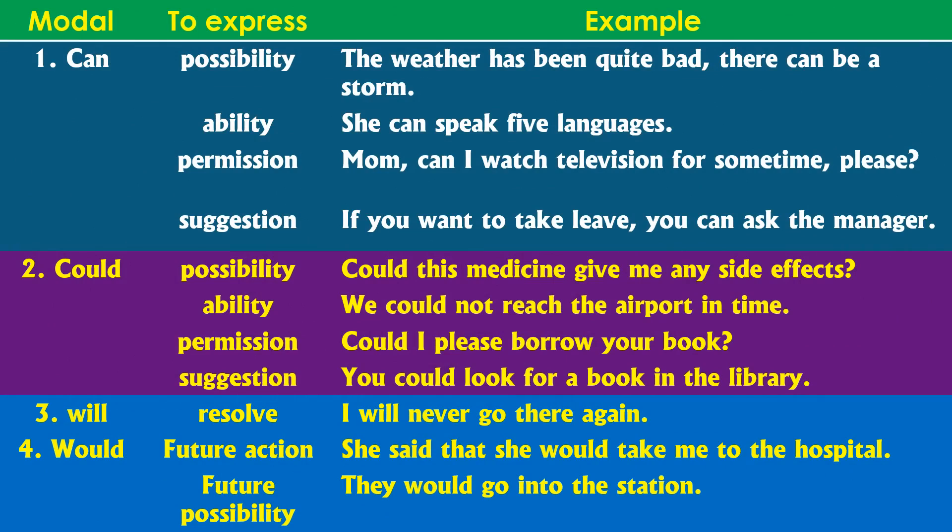The first modal is 'can.' Can is used to express possibility, ability, permission, and suggestion. For possibility: 'The weather has been quite bad, there can be a strong storm.' For ability: 'She can speak five languages.' For permission: 'Can I watch television for some time please?' — this is asking permission. For suggestion: 'If you want to take leave, you can ask the manager.' So 'can' is used for these four types of expressions.